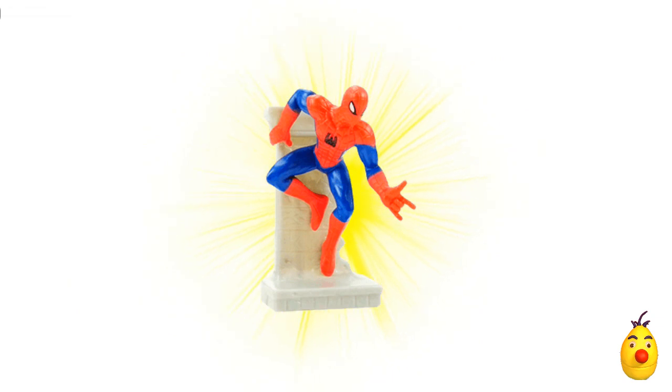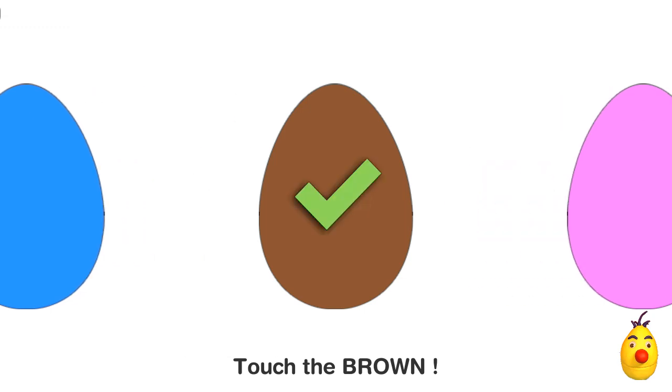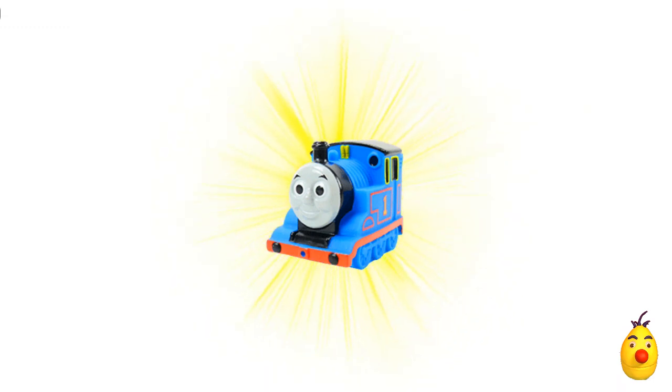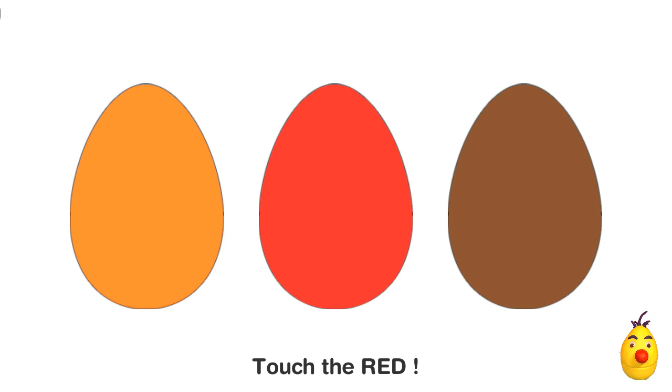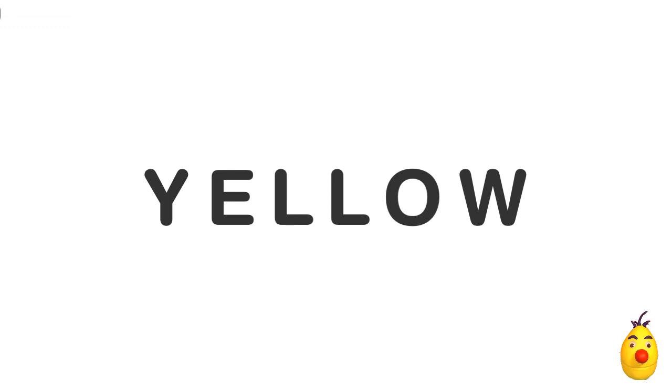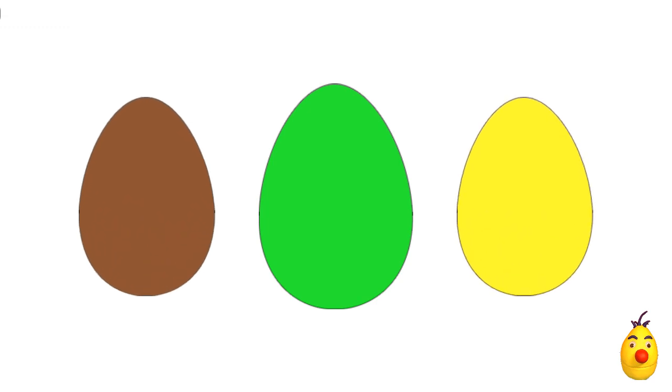R, E, D — Red, Brown. Where is the brown egg? R, E, D — Red. Touch the red egg. Y, E, L, L, O, W — Yellow. Touch the yellow egg.